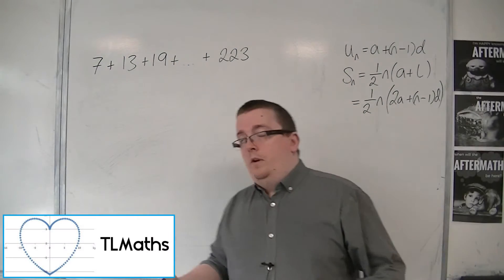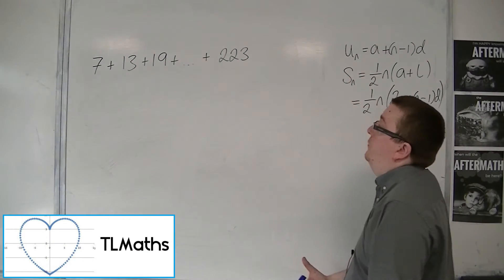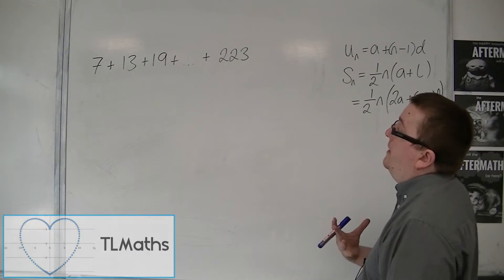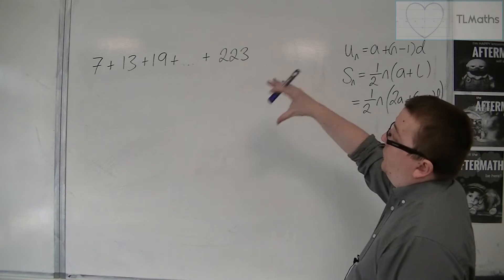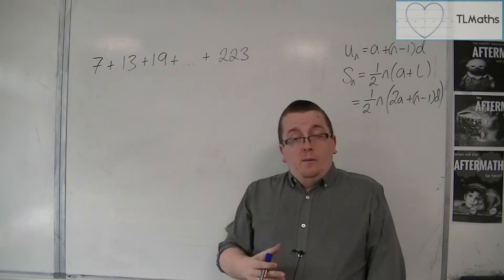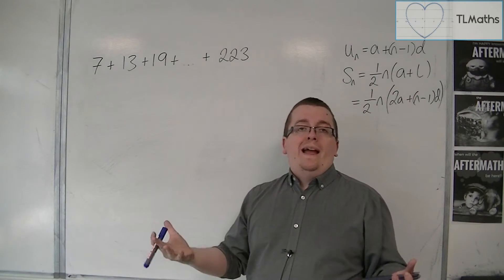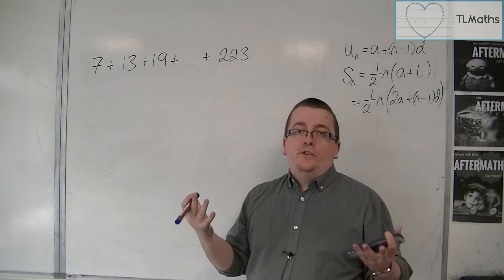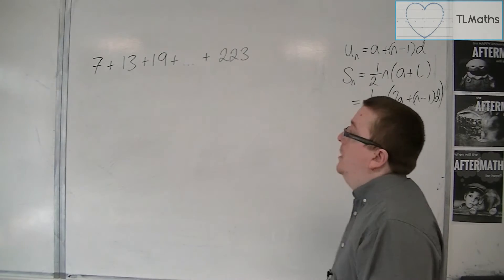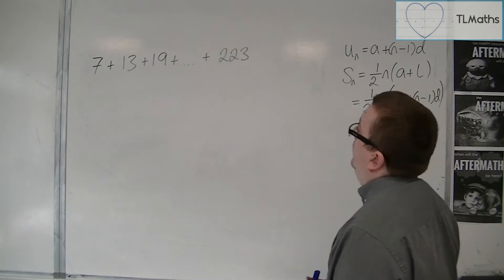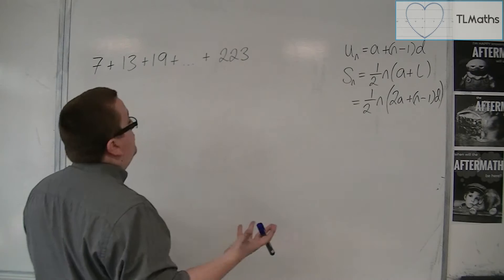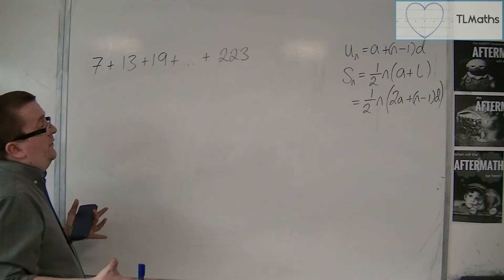So in this problem, we have 7 plus 13 plus 19, and it's going all the way up to 223, but I don't know how many terms there actually are. I need to add these all up, but I don't know what n is.